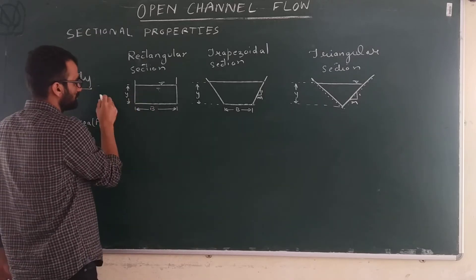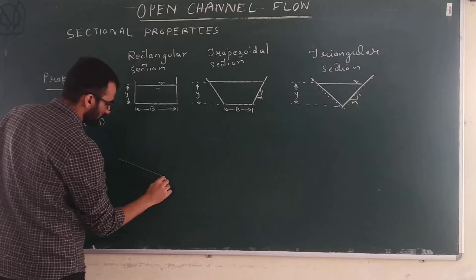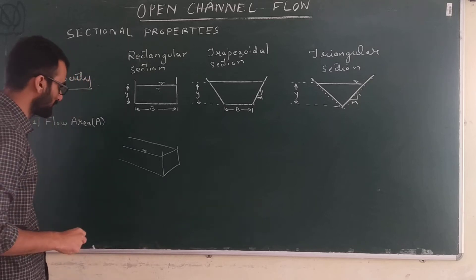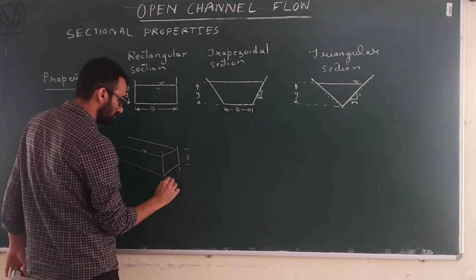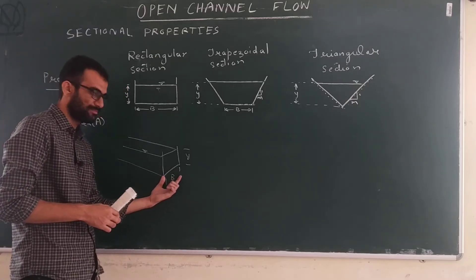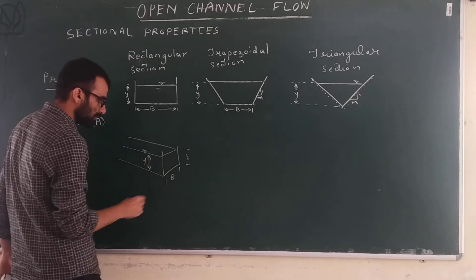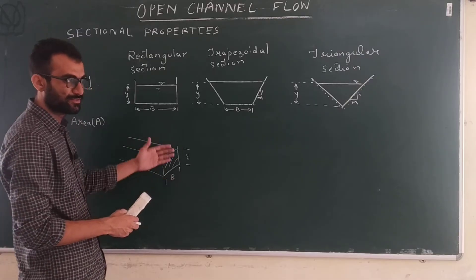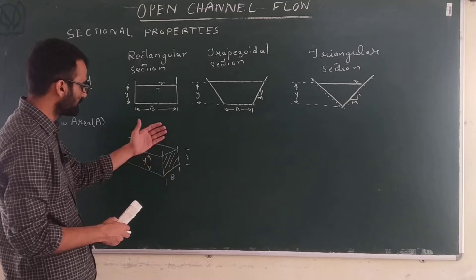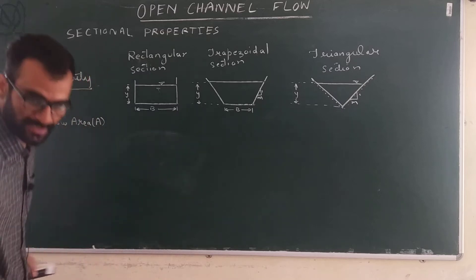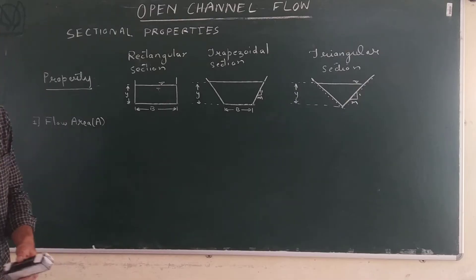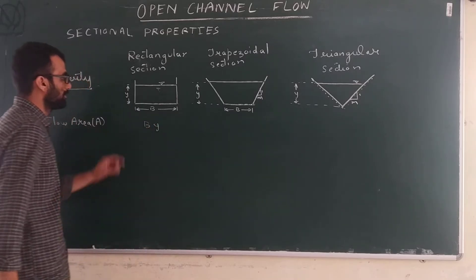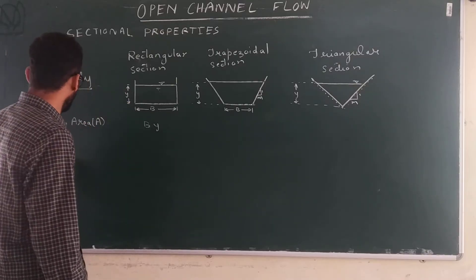If flow is taking place in a rectangular cross section, we have a flow depth and a base width. If you cut a cross section and measure the area through which flow is taking place, that area is called the flow area. For a rectangular cross section, the flow area will be B multiplied by Y — base width multiplied by flow depth.